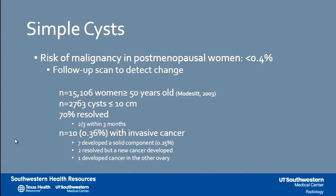Now let's discuss a more concerning population — the postmenopausal woman. She shouldn't really be ovulating, although spurious ovulatory events do happen in early menopause, so you still have to think this could be a neoplasm. In a study of simple ovarian cysts in women greater than 50 years old, for cysts less than or equal to 10 centimeters, most still resolved and the risk of invasive cancer was less than 1% — less than 0.4%.